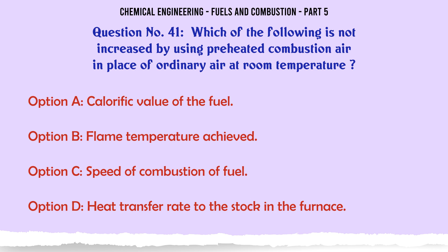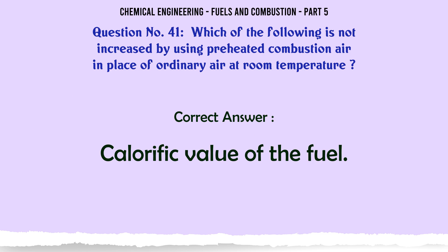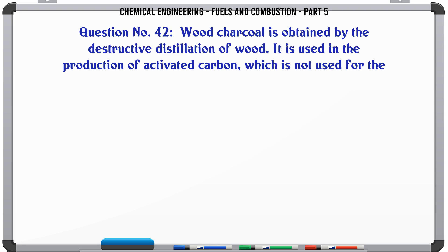Which of the following is not increased by using preheated combustion air in place of ordinary air at room temperature? A. Calorific value of the fuel. B. Flame temperature achieved. C. Speed of combustion of fuel. D. Heat transfer rate to the stock in the furnace. The correct answer is calorific value of the fuel.